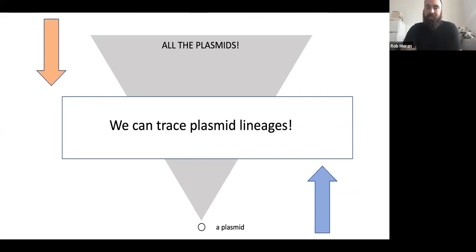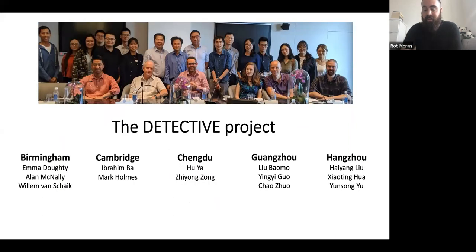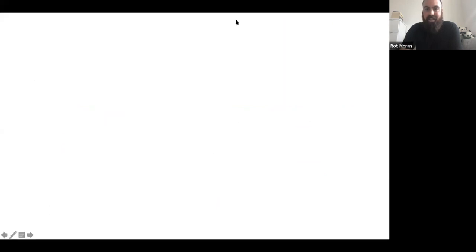In conclusion, basically we can trace plasmid lineages and we can begin to trace plasmid lineages now. But I think what we really need is discussion to reconcile our approaches and sort of come up with a means by which we can get all of this much better, much more powerful in future, I suppose. And so, just to conclude, thanks to everyone involved with Detective. And thanks to everyone here, particularly the organizers for giving me the chance to speak today, and apologies for coming over time.